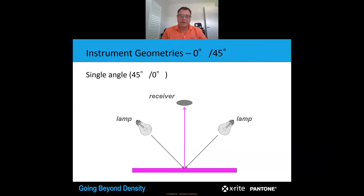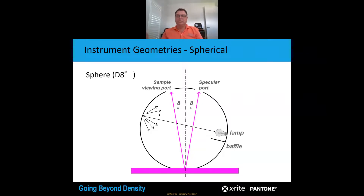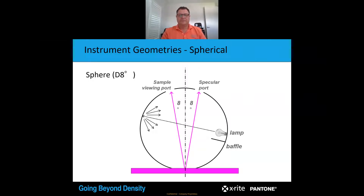You can't use a 0/45 degree device to measure aluminium materials or metallised foils — it will measure them as black. The other device used is what we call a spherical device, used for those really hard-to-measure surfaces like foils and metallised substrates. All light is trapped inside the sphere when you take a measurement — which is a combination of colour and gloss. By opening the specular port, we're able to exclude the gloss component and take a colour-only measurement, which is why we can measure polished reflective surfaces. However, this device cannot measure ink density, whereas the 0/45 device can.